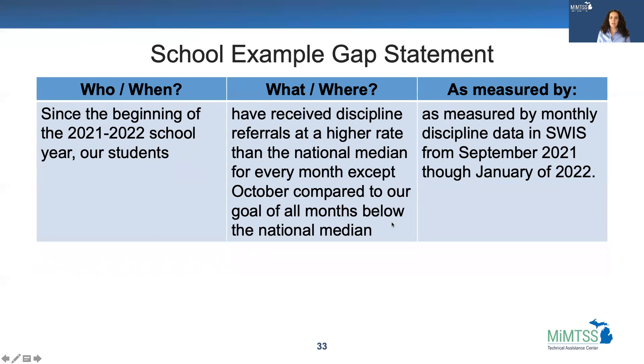compared to our goal of all months below the national median, as measured by monthly discipline data in SWIS from September 2021 through January 2022.